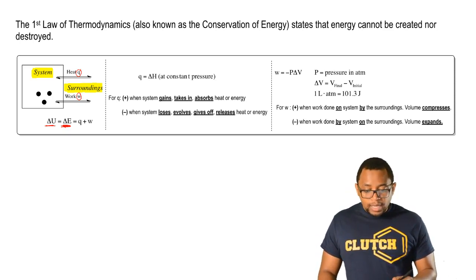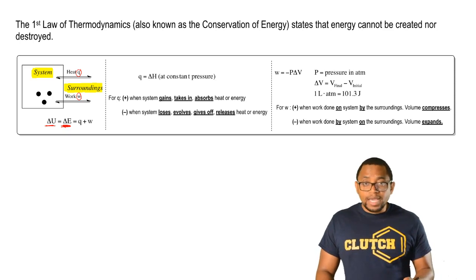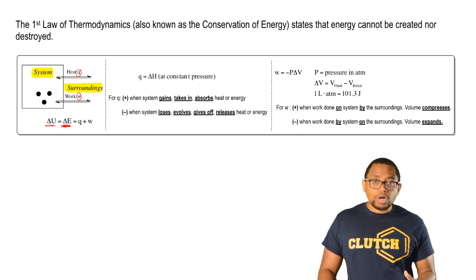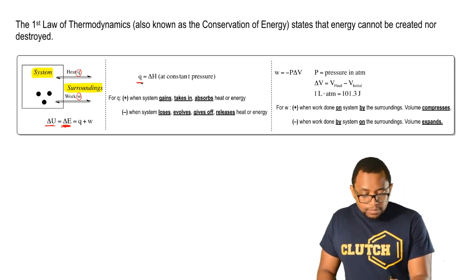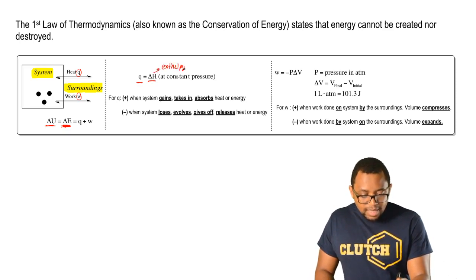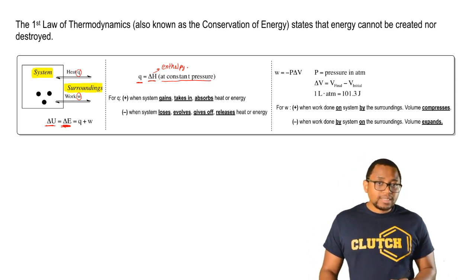Heat can go between systems and surroundings — either the system is taking in the heat or the surroundings is taking in the heat. Work is the same: either the system does work on the surroundings or the surroundings do work on the system. We're going to say that Q is also equal to delta H, which is my enthalpy. This happens at constant pressure — when pressure is constant, Q and delta H are the same thing.